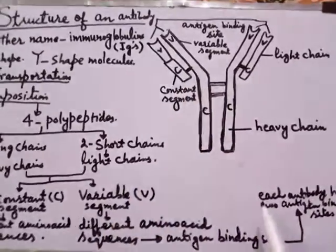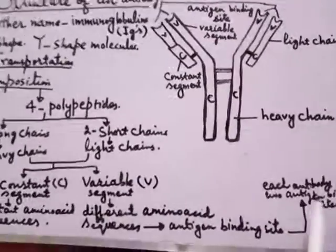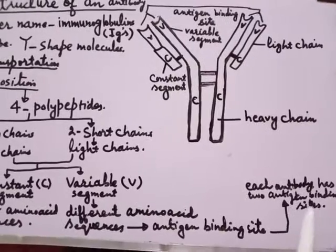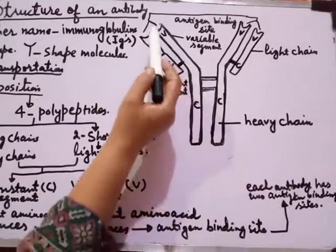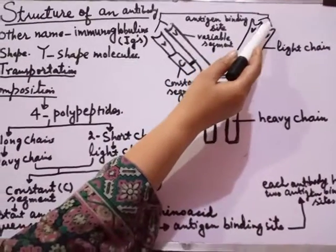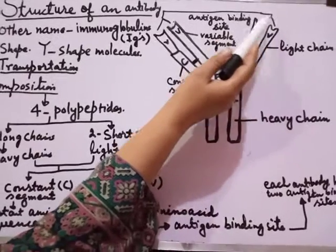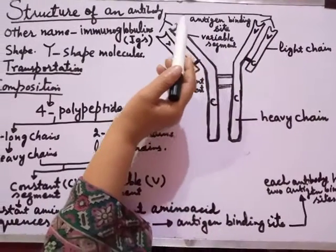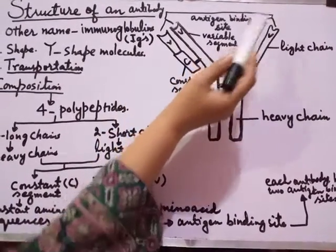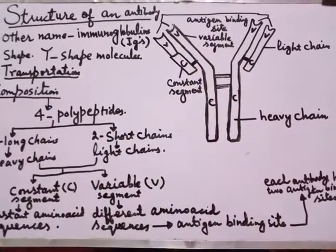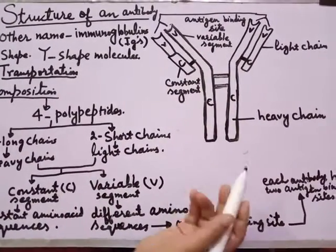Each antibody has two antigen binding sites. You can see it has two antigen binding sites. This is all about the structure of an antibody molecule. Thank you, students.